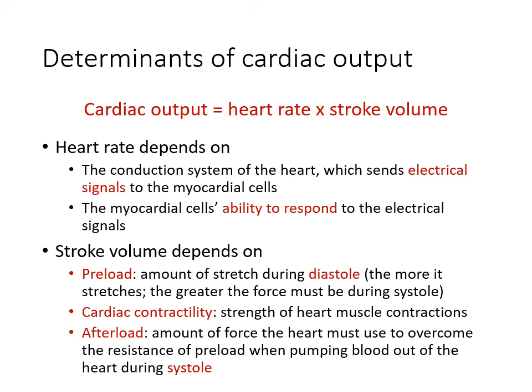Stroke volume depends on three factors: preload, cardiac contractility, and afterload. Preload is the amount of stretch during diastole — the more the heart stretches, the greater the force must be during systole. Cardiac contractility is the strength of the heart muscle contractions, how strongly the heart contracts to pump blood out to the body. Afterload is the amount of force the heart must use to overcome resistance when pumping blood out during systole.